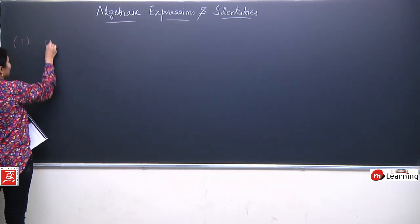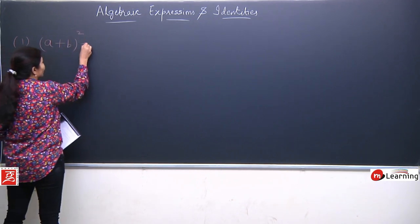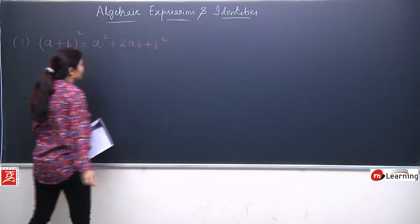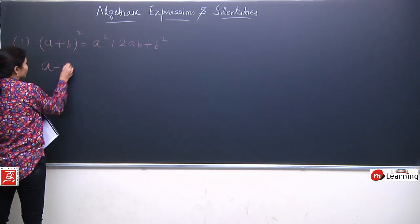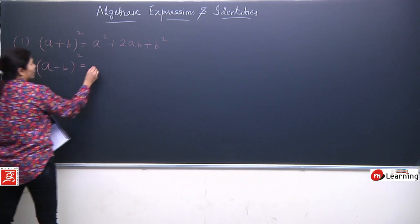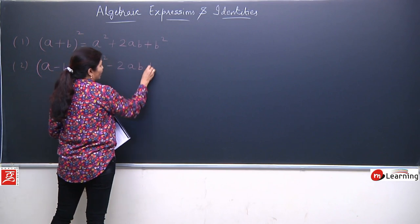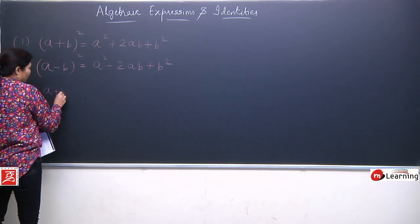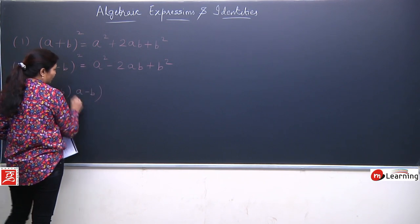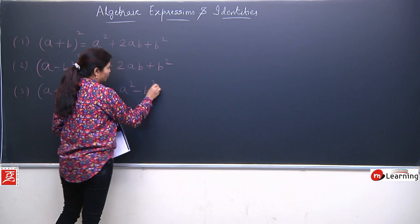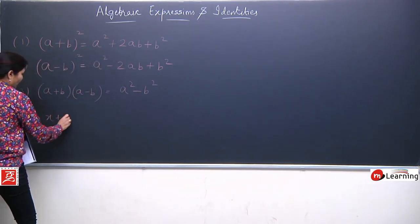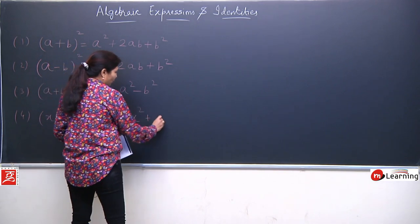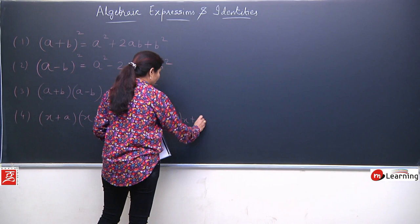First identity: if we have (a + b) whole square, then we can write a² + 2ab + b². Second: if we have (a - b) whole square, then we can write a² - 2ab + b². Third: (a + b)(a - b) = a² - b². And fourth: if we have (x + a)(x + b), then it is equivalent to x² + (a + b)x + ab.